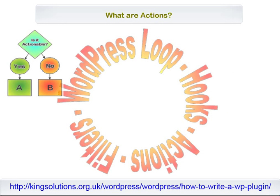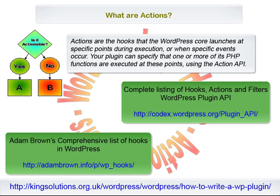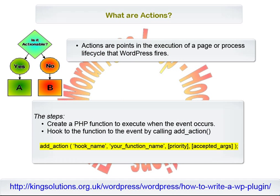What are actions? WordPress states: actions are the hooks that WordPress calls at specified points during execution or when specific events occur. Your plugin can specify that one or more of its PHP functions are executed at these points using the Action API. The basic steps to making this happen are: create a PHP function to execute when the event occurs, then hook the function to the event by calling the AddAction function.